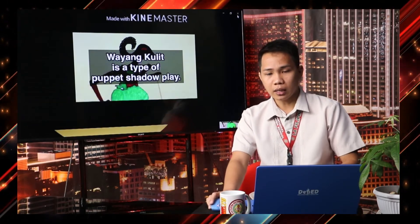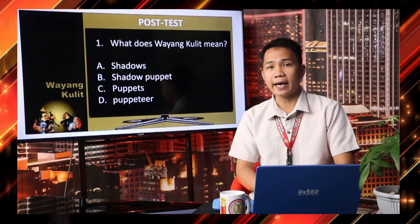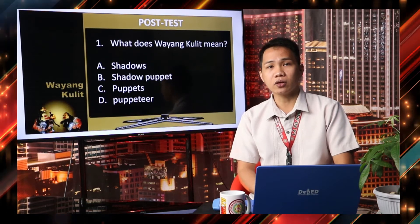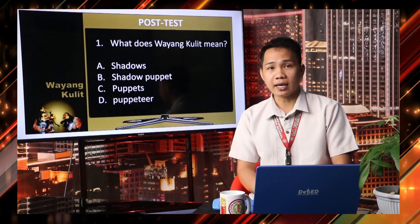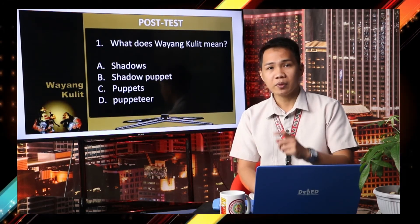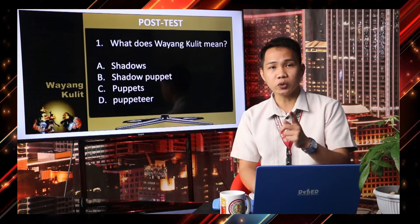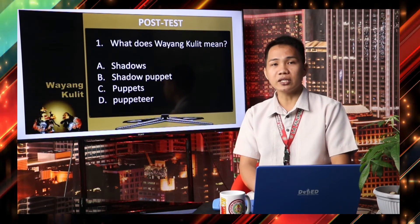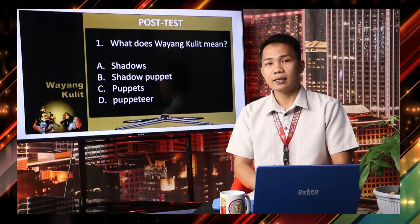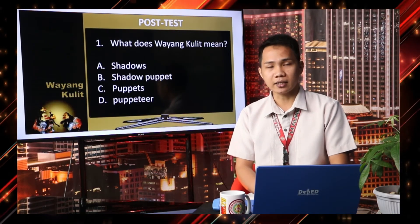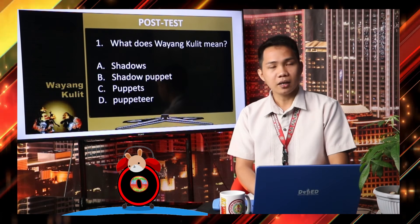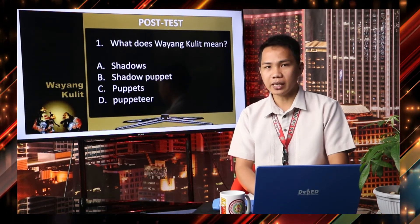We come to the end. Before we watch another video about the whole performance of Wayang Kulit, I will give you a post-test to evaluate your knowledge about our discussion. Number one: What does Wayang Kulit mean? Letter A, Shadows. Letter B, Shadow Puppet. Letter C, Puppets. Letter D, Puppeteer. Your five seconds starts now. The correct answer is Letter B, Shadow Puppet.